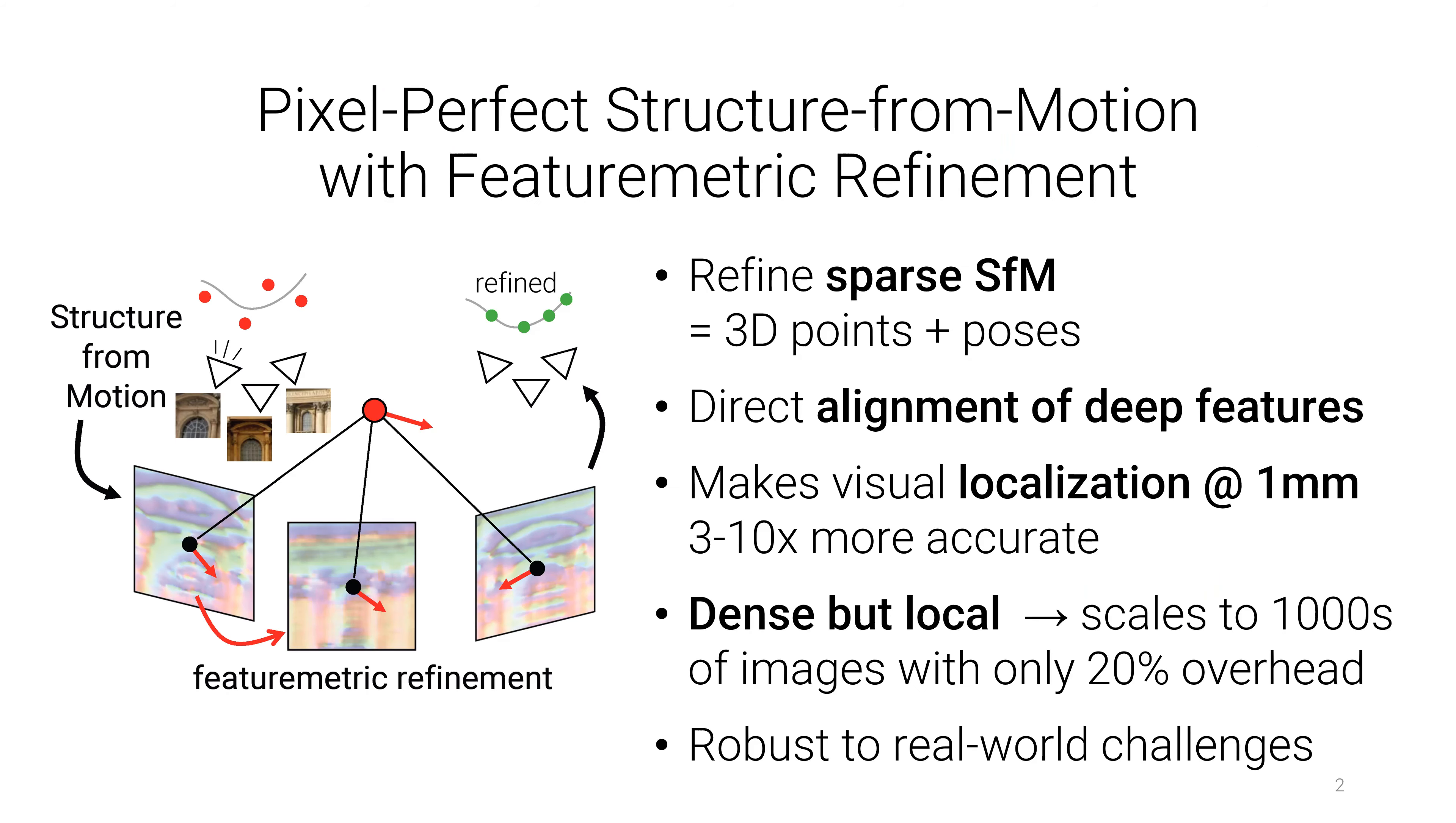In this project we propose to improve sparse structure from motion by aligning deep features across multiple views. This dramatically improves the accuracy of 3D points and camera poses, yielding sub-pixel accurate reconstructions and scales to thousands of images with only a small overhead.